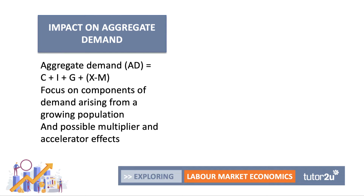When we think about aggregate demand we go back to our formula that AD is C plus I plus G plus X minus M. We're thinking about linking migration to one or more of the components of aggregate demand, particularly if there's a sustained increase in net migration into a country. We also need to add in the possible multiplier and accelerator effects we shall talk about in this video.